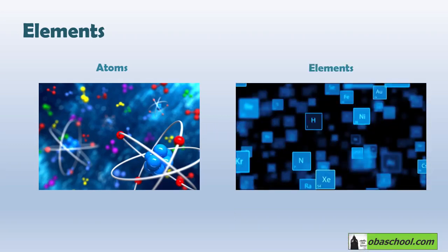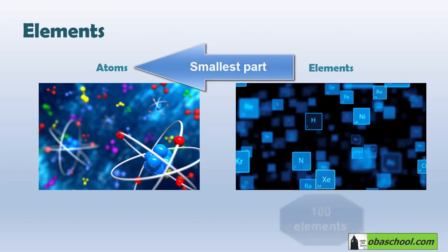And because there are only about 100 different types of atoms, there are only about 100 different elements. So, an atom is the smallest part of an element that can exist.